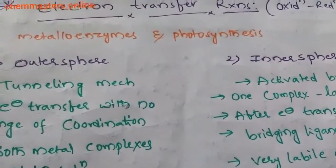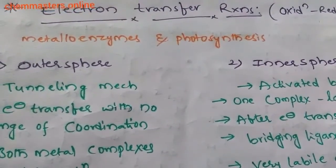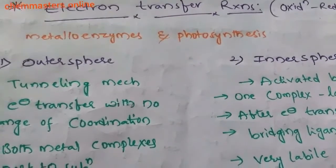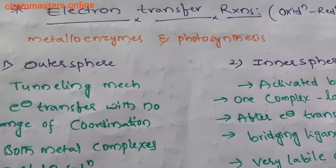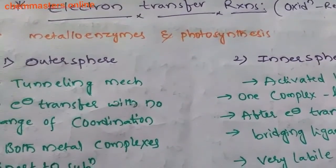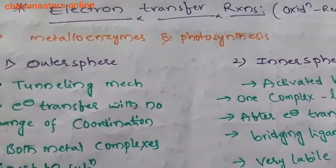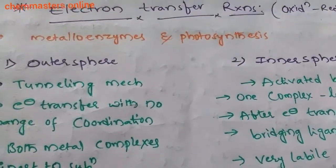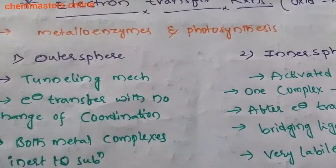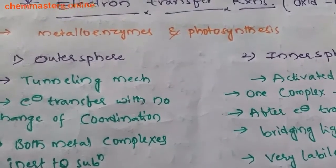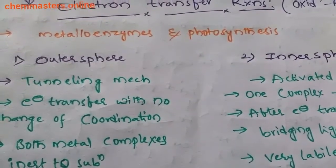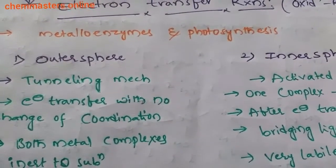Electron transfer reactions are very important in metal complexes, in metalloenzymes, and in photosynthesis. That's why they are very important, and also as part of our examinations — CSIR and GATE.